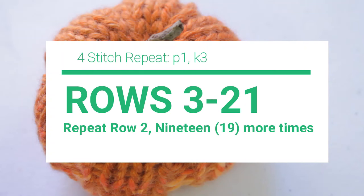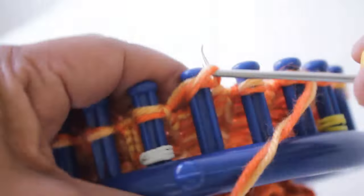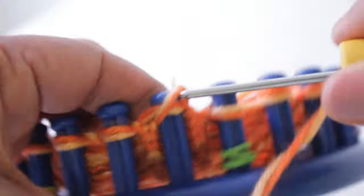For rows three through 21, you're just going to repeat row two 19 more times. So just keep knitting that purl one, knit three. When you're done knitting those rows, you're ready for row 22 where you're just gonna knit. You know that you continue to use the Uwrap version of the knit stitch and I'm not gonna go into great detail because at this point, you're an expert.